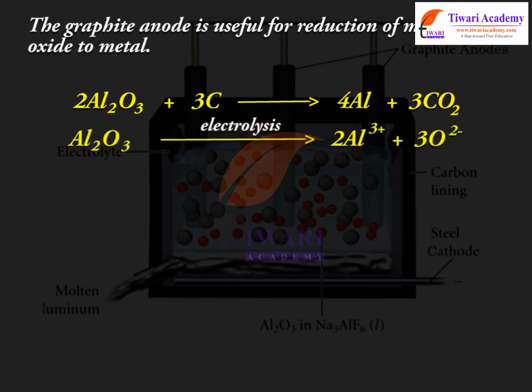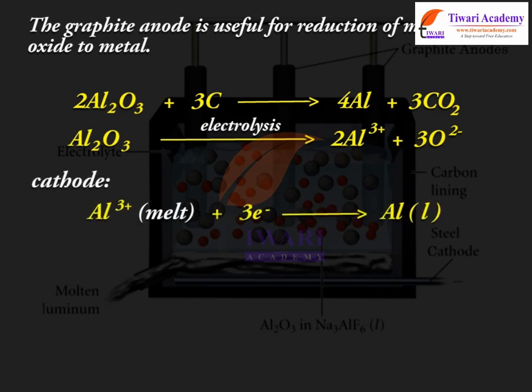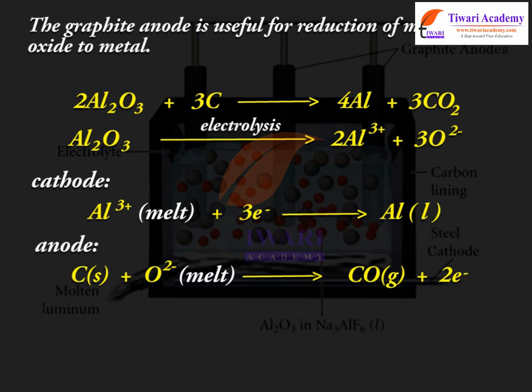Al₂O₃ on electrolysis gives 2Al³⁺ + 3O²⁻. At the cathode: Al³⁺(melt) + 3e⁻ → Al(l). At the anode: C(s) + 2O²⁻(melt) → CO₂(g) + 4e⁻.